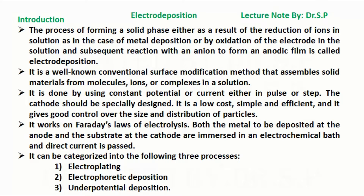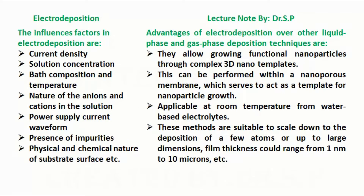It can be categorized into the following three processes: electroplating, electrophoretic deposition, and underpotential deposition. The influencing factors in electrodeposition are current density, solution concentration, bath composition and temperature, and nature of the anions and cations in the solution.